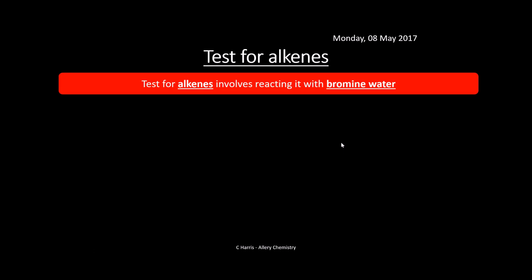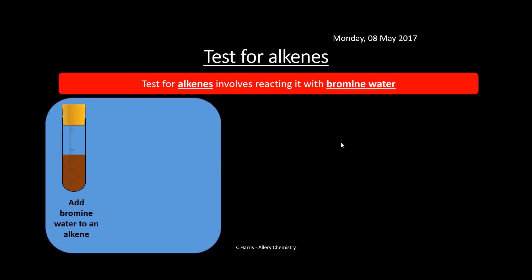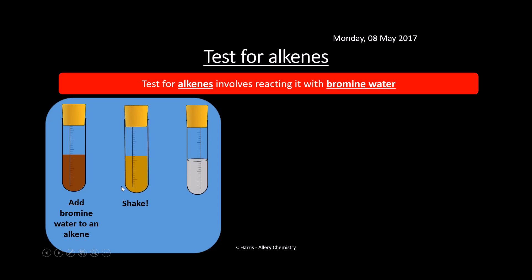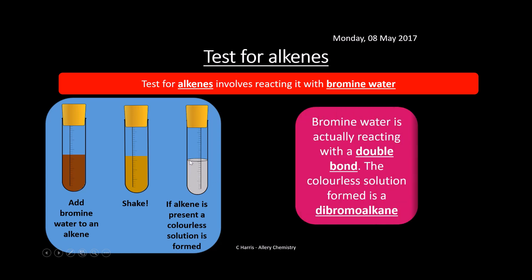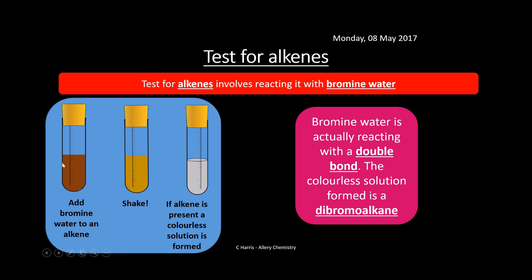Test for alkenes: this is pretty straightforward. You just add bromine water to your alkene, make sure you put a bung on top, and give it a good shake. If an alkene is present, you should get a colorless solution forming — that's a classic sign of an alkene. What's happening is the bromine water is reacting with the double bond and we're forming a dibromoalkane, which is colorless. You'll need to know this reaction and the mechanism for it from the alkenes topic.